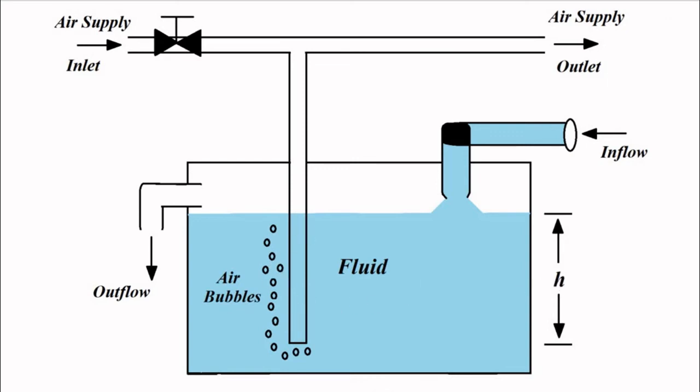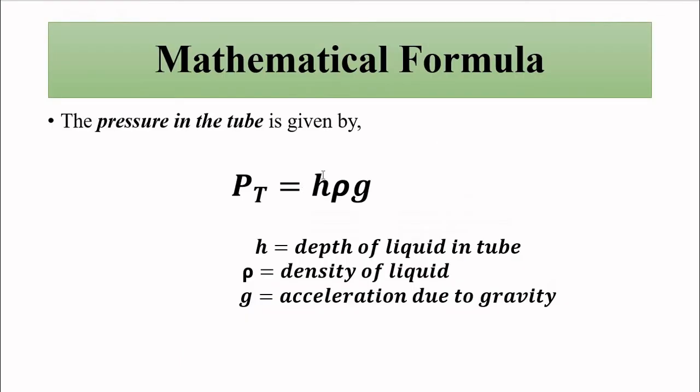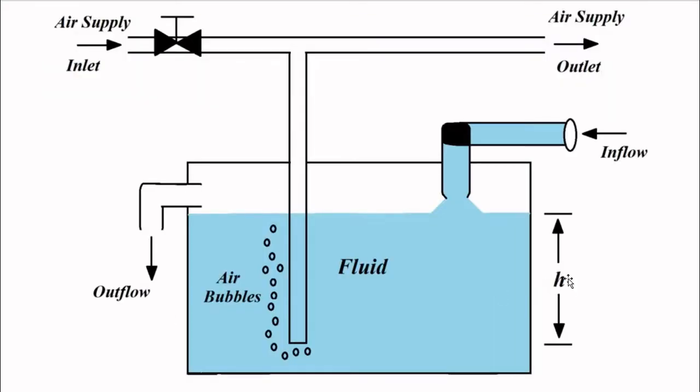The pressure generated by the air bubbles in this much portion h of the tube, height h of the tube, is given by h*rho*g. The important thing is that this h is fixed because level is maintained fixed in the container with the help of level measurement techniques.